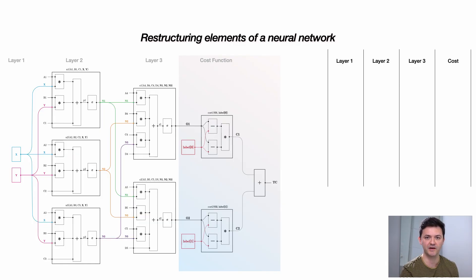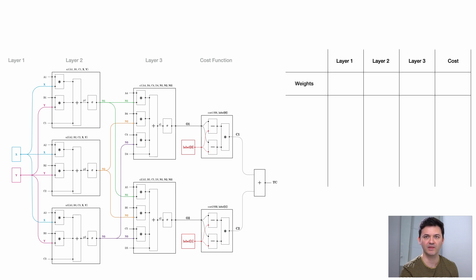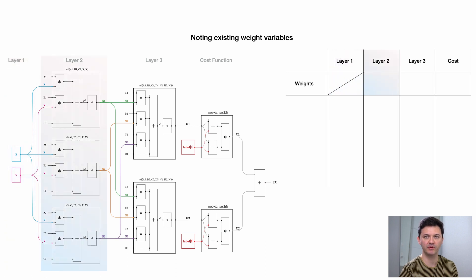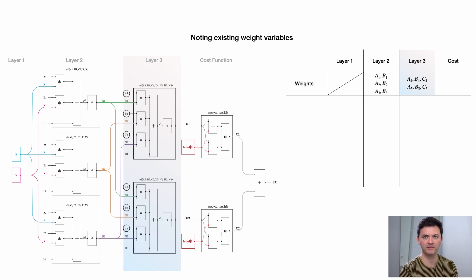What are the main classes of elements we can find in a neural network? The first one I would say are the weights. In the first layer we have our data points — there are no weights associated with these. In layer 2, we have weights a1 and b1 belonging to the first neuron, and weights a2 and b2 belonging to the second neuron. In layer 3, we have a4, b4, and c4 as weights of the first neuron, and a5, b5, and c5 belonging to the second neuron. The cost function has no weights — we are subtracting elements, not multiplying by weights.